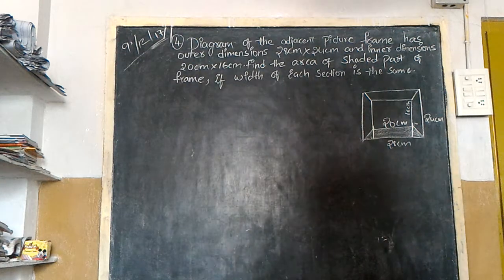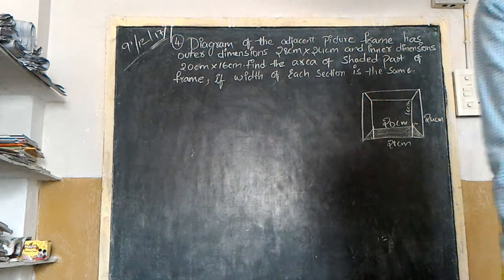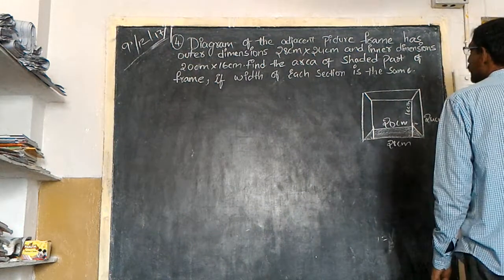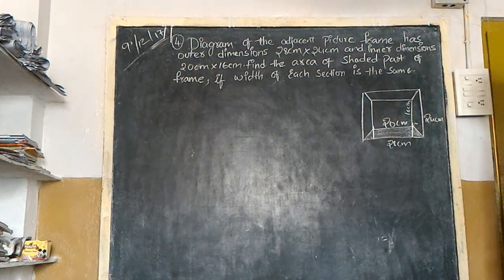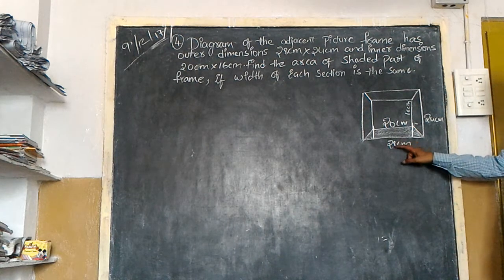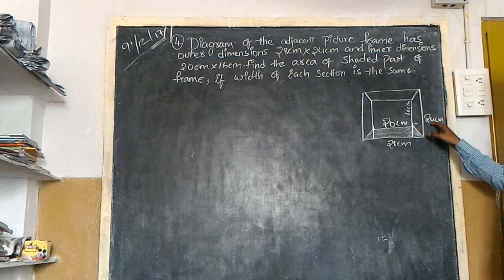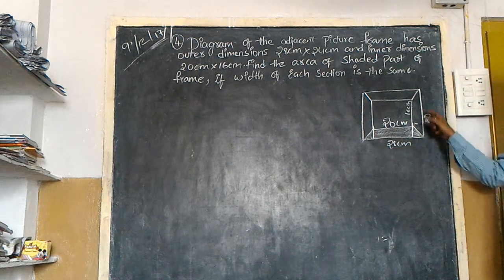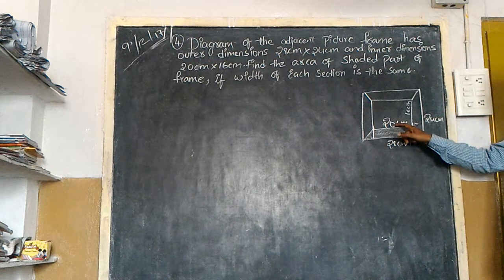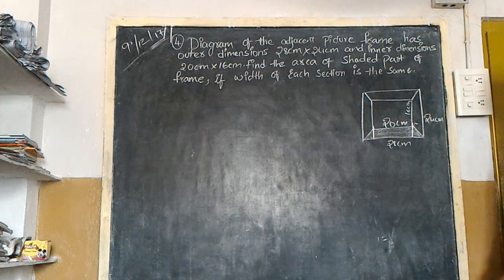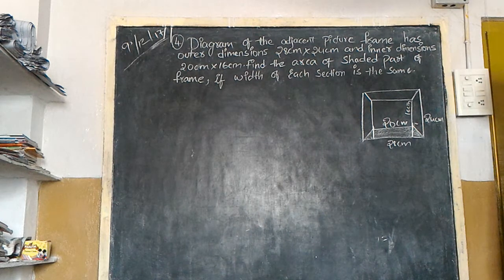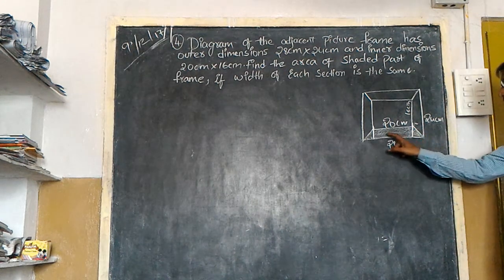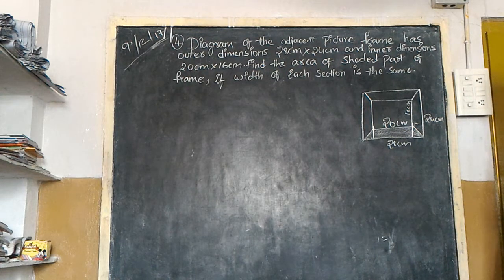Look at the board carefully. The diagram of the adjacent picture frame has outer dimensions of 28 by 24 — 28 is the length and 24 is the breadth. The second dimensions are 20 centimeters and 16 centimeters. Find the area of the shaded part of the frame.